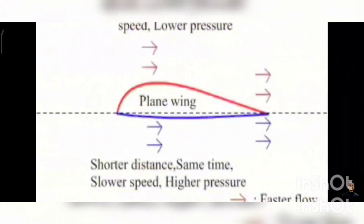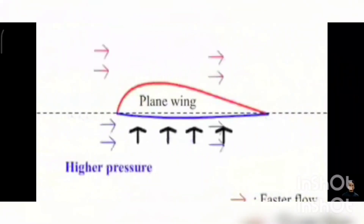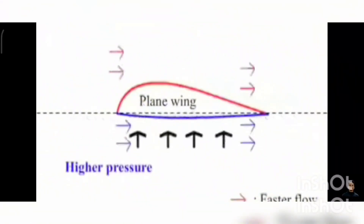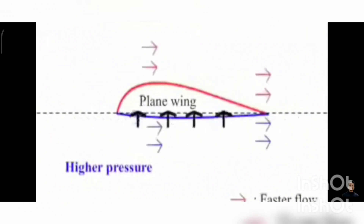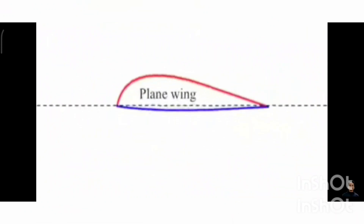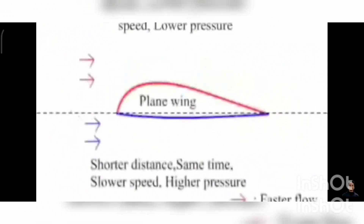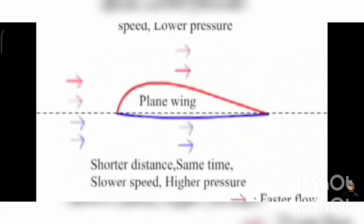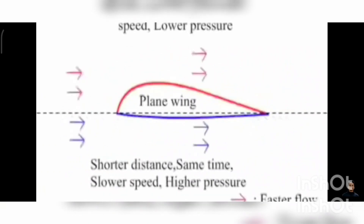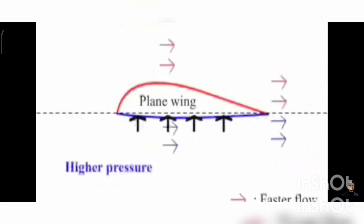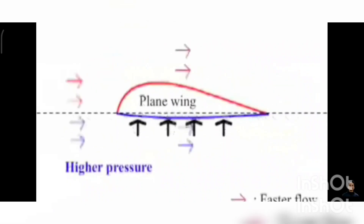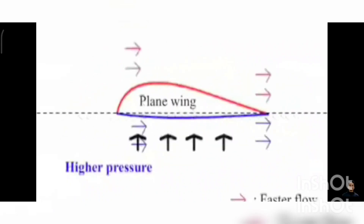Bernoulli's principle helps explain why an aircraft can achieve lift. The wings are shaped in such a way that the air on the top of the wings flows faster and the air below it flows slower, which causes a high pressure area underneath it, which pushes the aircraft upwards into the lower pressure zone.